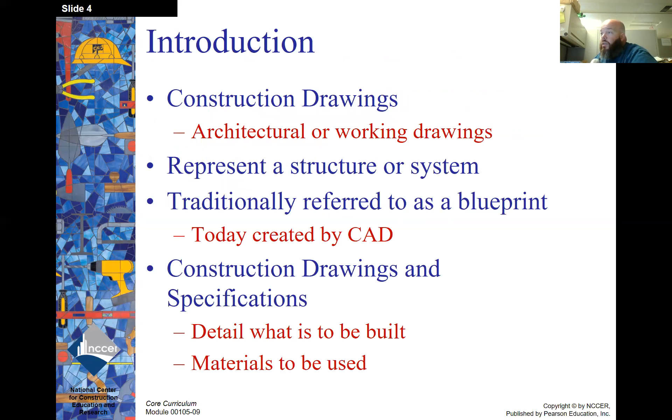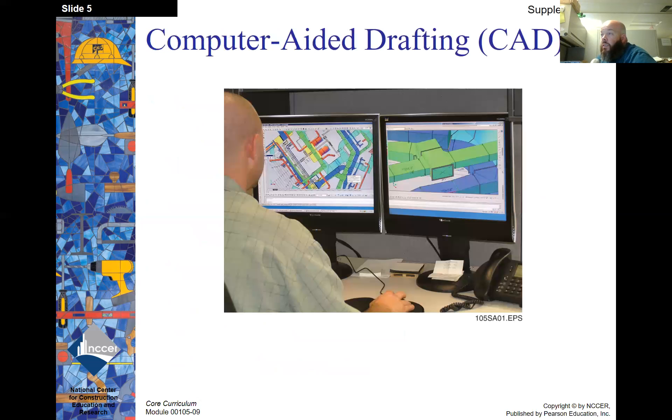Introduction to construction drawings. There are architectural and working drawings, two types. They represent a structure or structure system, and they're traditionally referred to as a blueprint, which had to do with the way they were copied. Today they're created by CAD or computer-aided drafting program. Construction drawings and specifications detail what is to be built and the materials to be used.